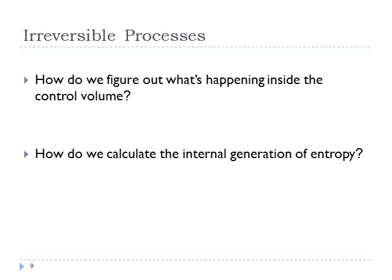Now we're going to talk about what we really mean by irreversible processes. This is more a question of kinetics — how do we figure out what's happening inside the control volume, how fast reactions are occurring? Most of equilibrium thermodynamics doesn't tell you anything about reaction rates. We need to figure out how fast reactions are going and how much internal generation of entropy is occurring, because that sigma-dot-irreversible term shows up as a major term in the first and second law balance.